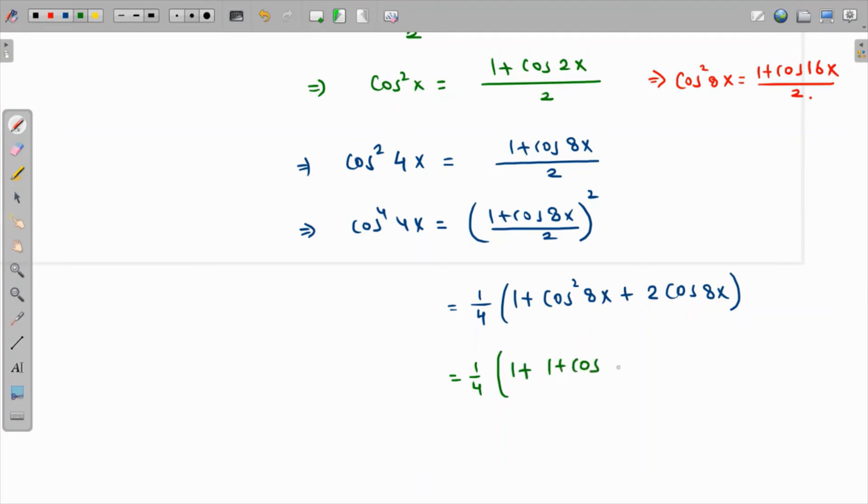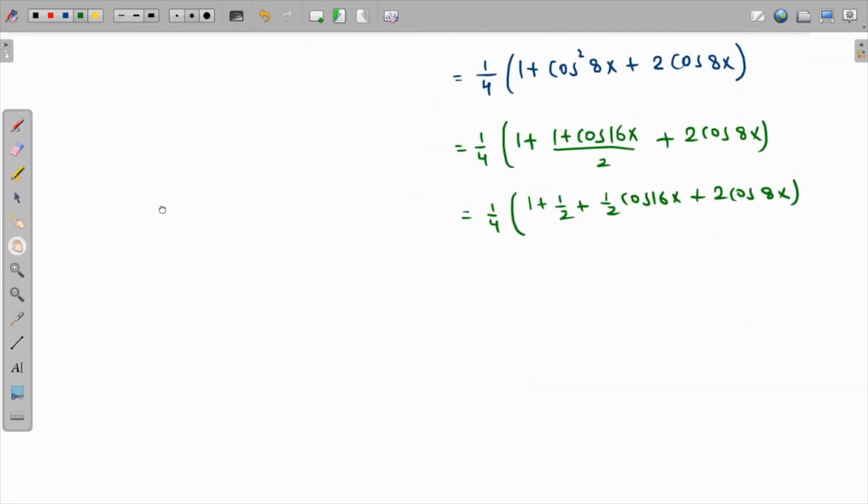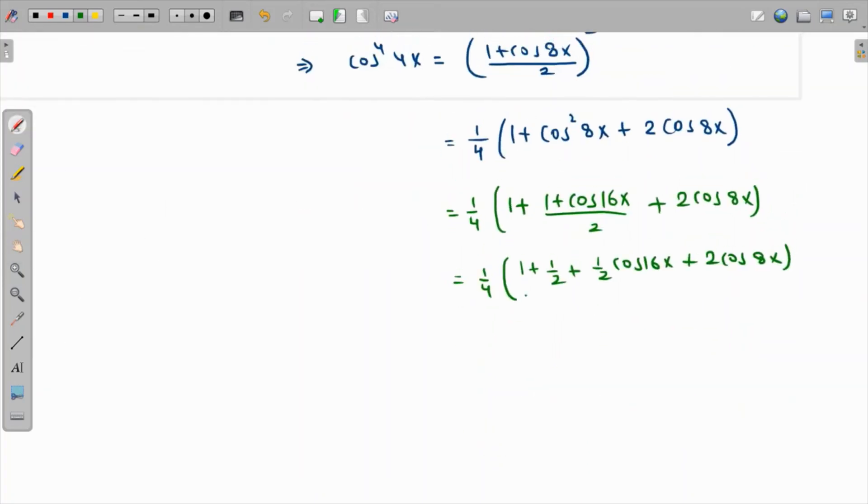Substituting, we get 1/4 times (1 + (1 + cos 16x)/2 + 2cos 8x). This becomes 1/4 times (1 + 1/2 + (1/2)cos 16x + 2cos 8x).